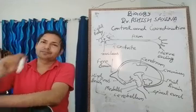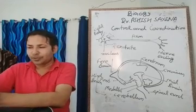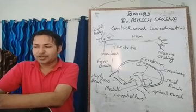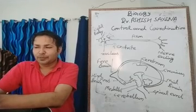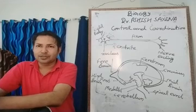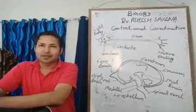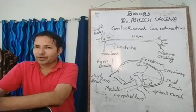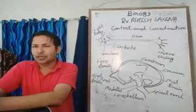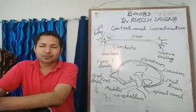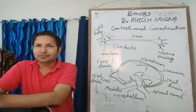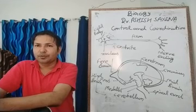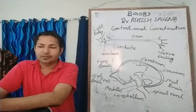Adrenal glands are called glands of emergency because hormones — adrenaline and noradrenaline — are released in emergency conditions. The pancreas contains alpha and beta cells and releases insulin. Deficiency of insulin hormone causes the disease called diabetes.